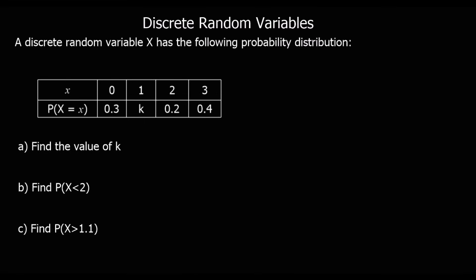We've got a very similar question — pause the video and give this one a go, then press play when you're ready. We've got a different discrete random variable this time. X can take the values 0, 1, 2 and 3. The probabilities have to add up to one whole, so we've got 0.3 plus 0.2 plus 0.4, which is 0.9. So k must be 0.1.